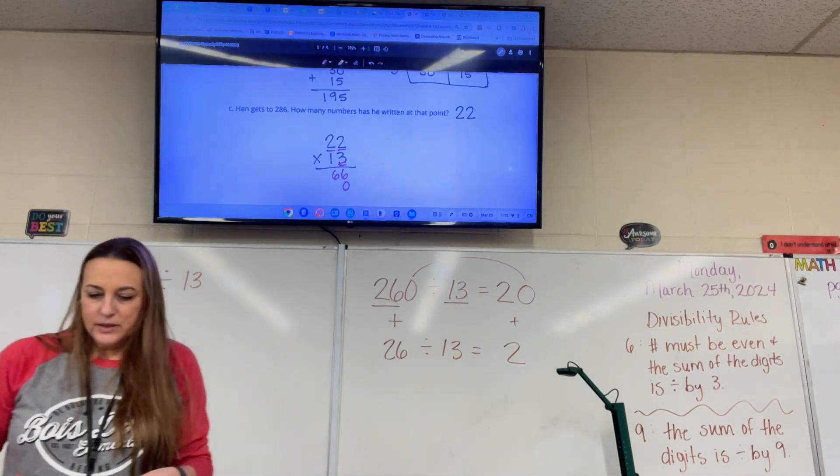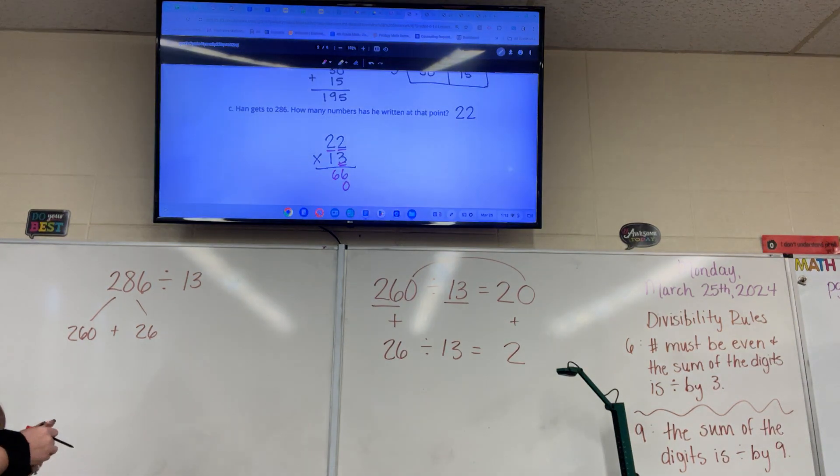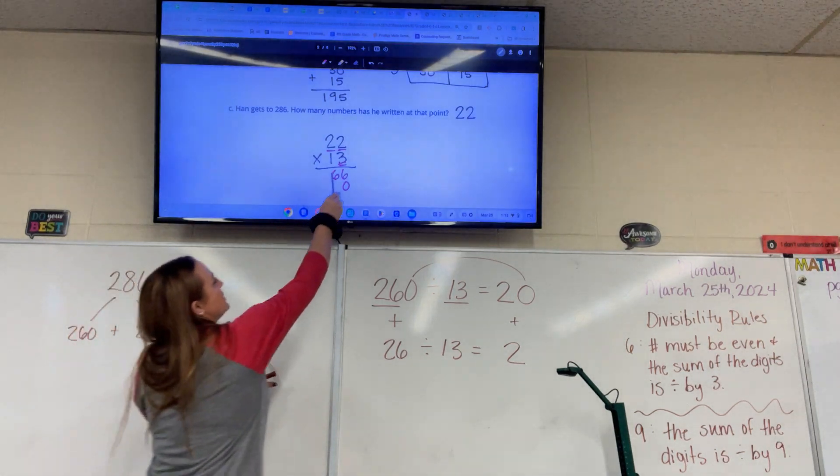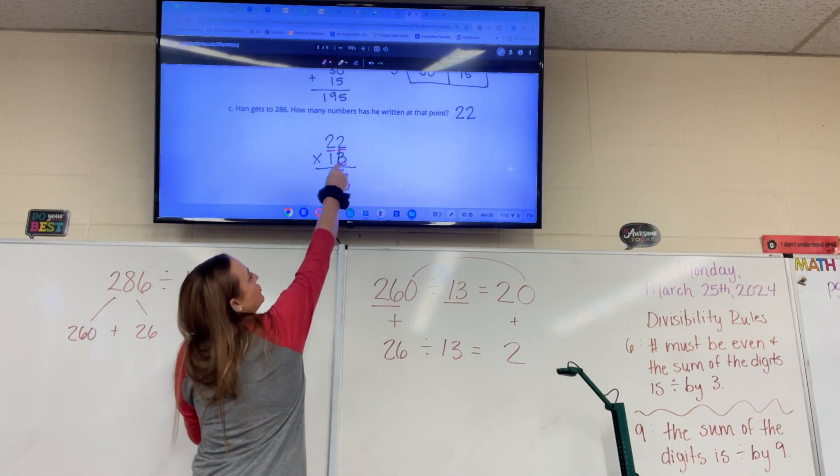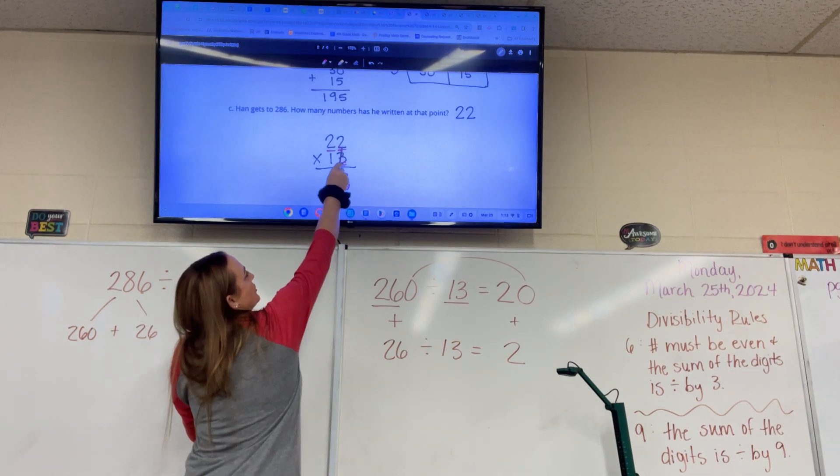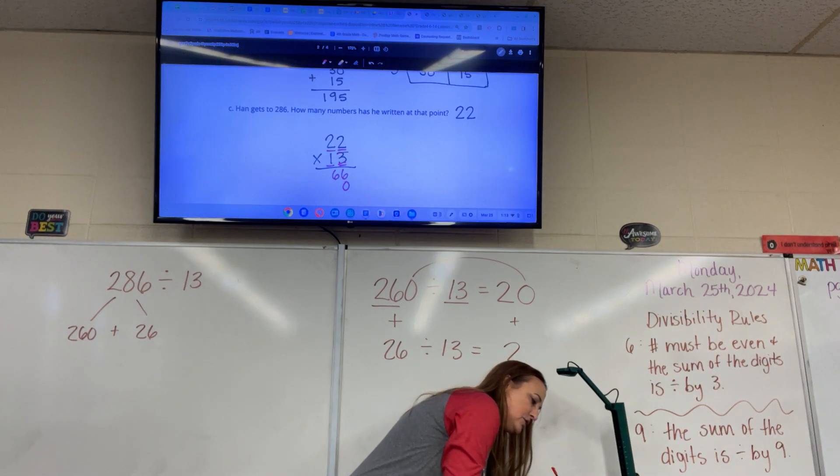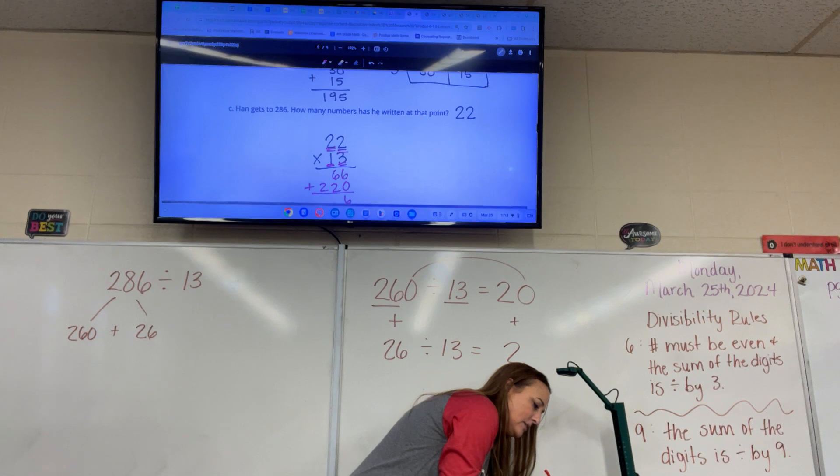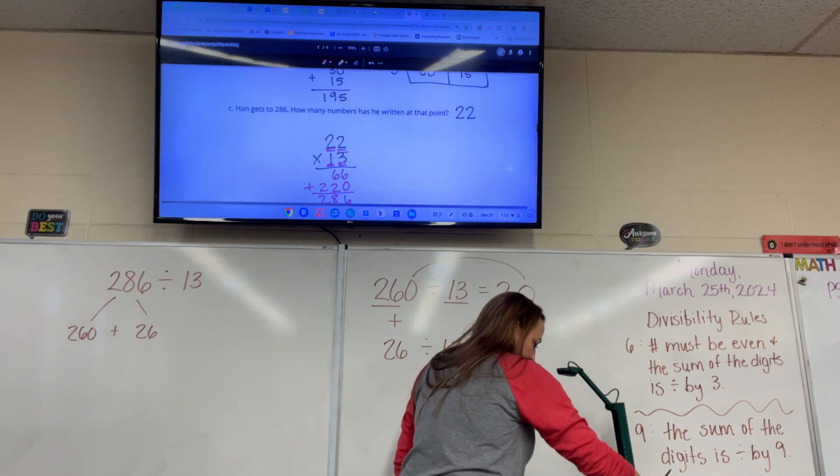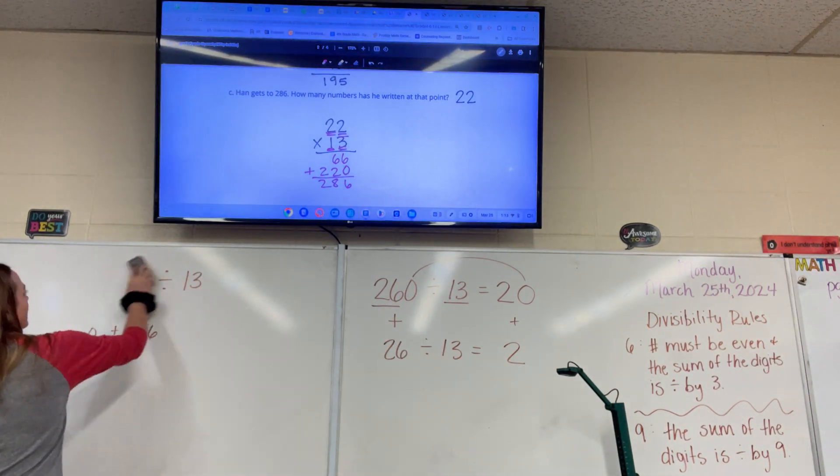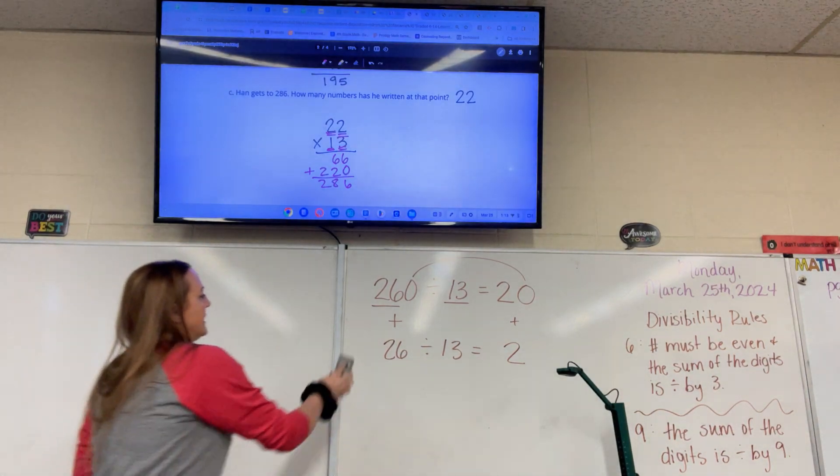Okay? And now, what was the first number we multiplied 3 times? This 2 right here, right? So that's the first number we're going to multiply the 1 times. Okay. So 1 times 2 is 2. And 1 times 2 is 2. So then we would stack them and add them, and we would get 286. So we did it correctly. 22 is what we get when we get to 286.